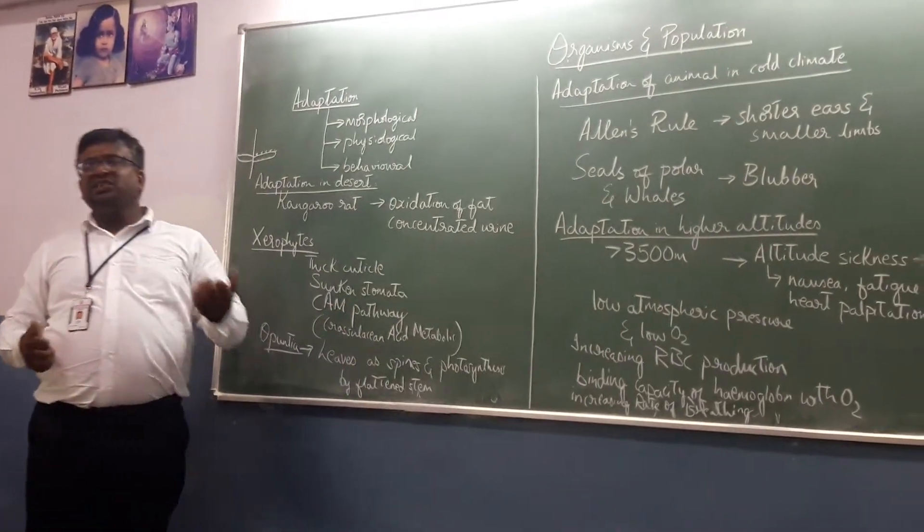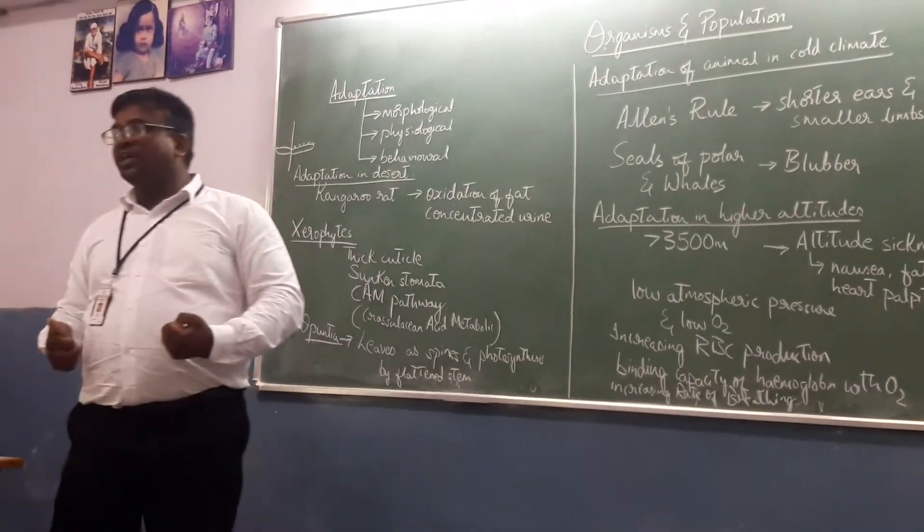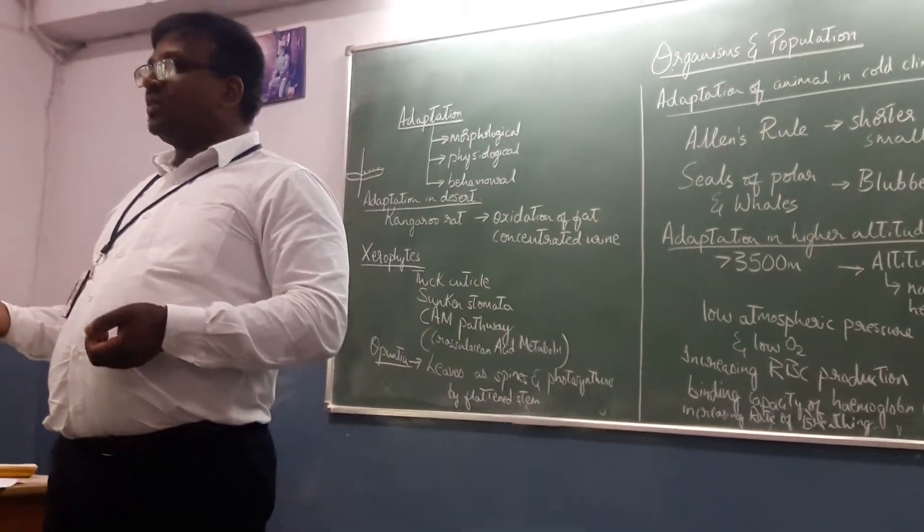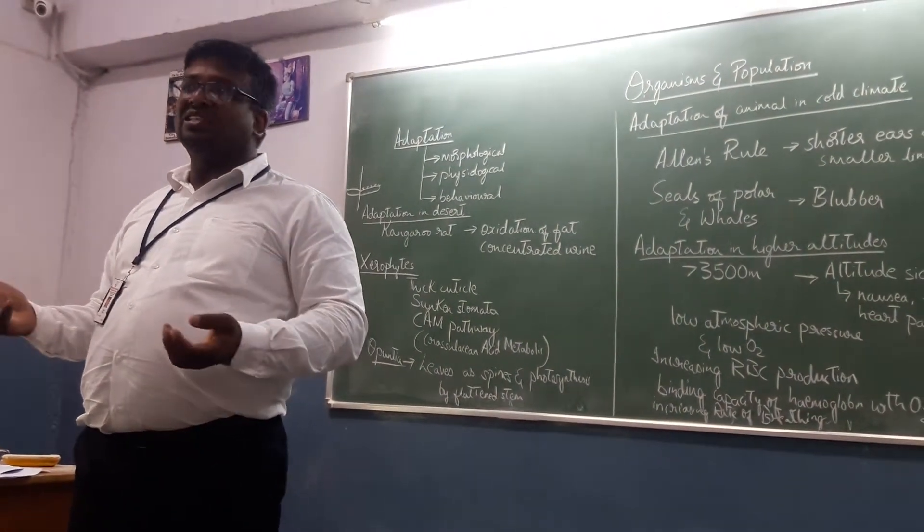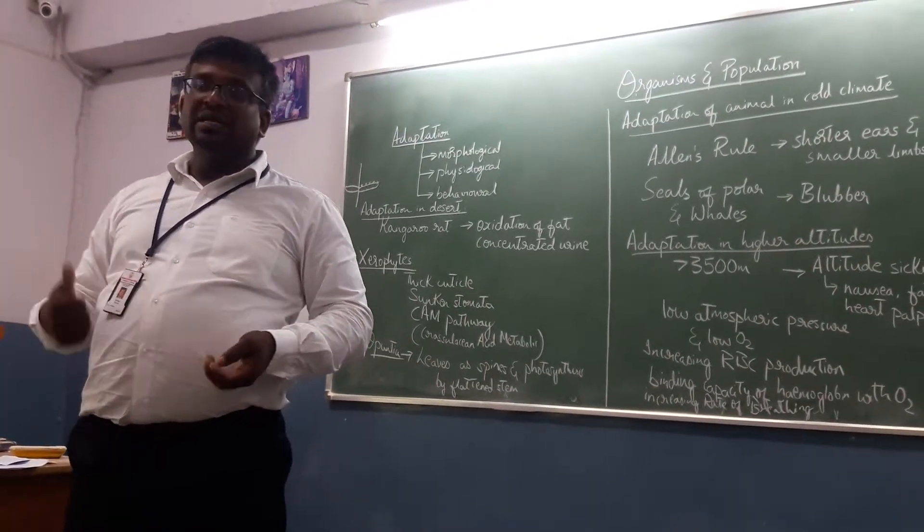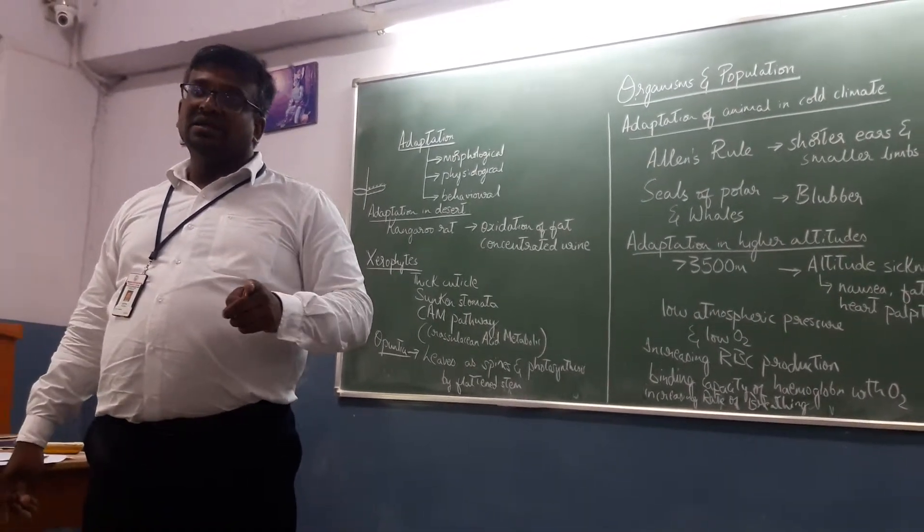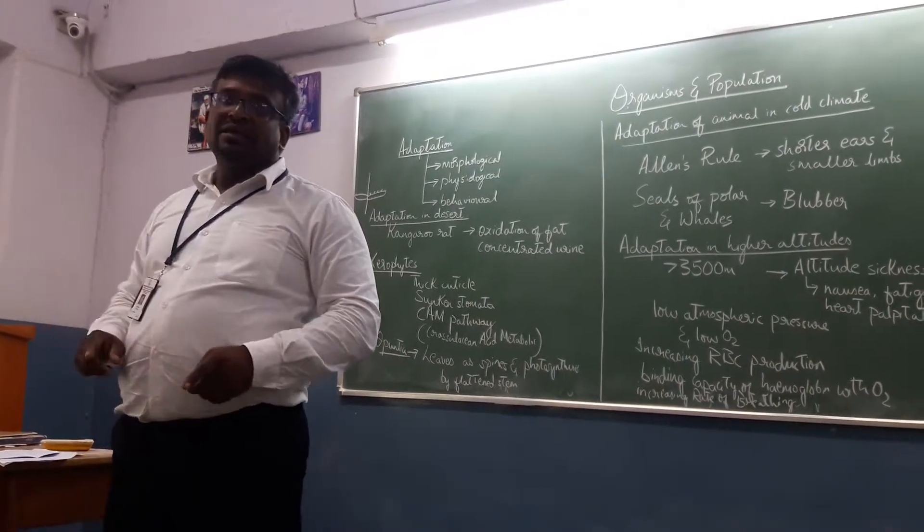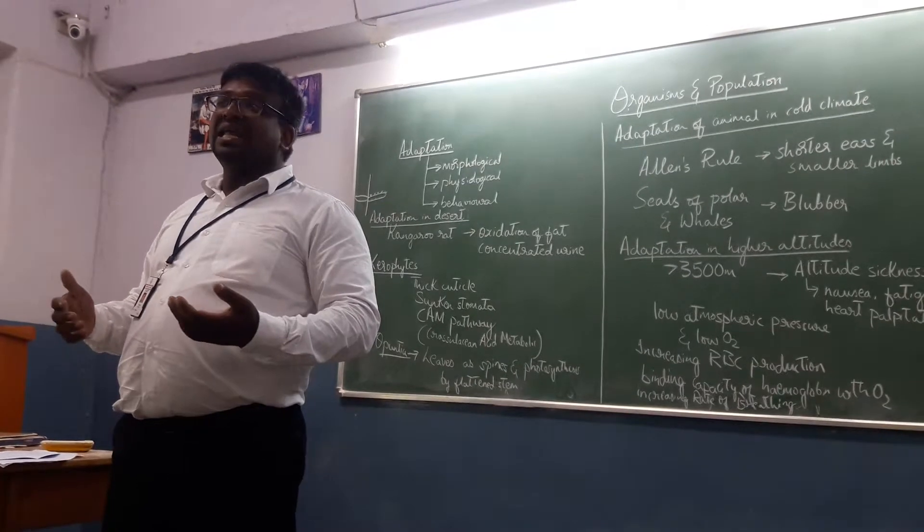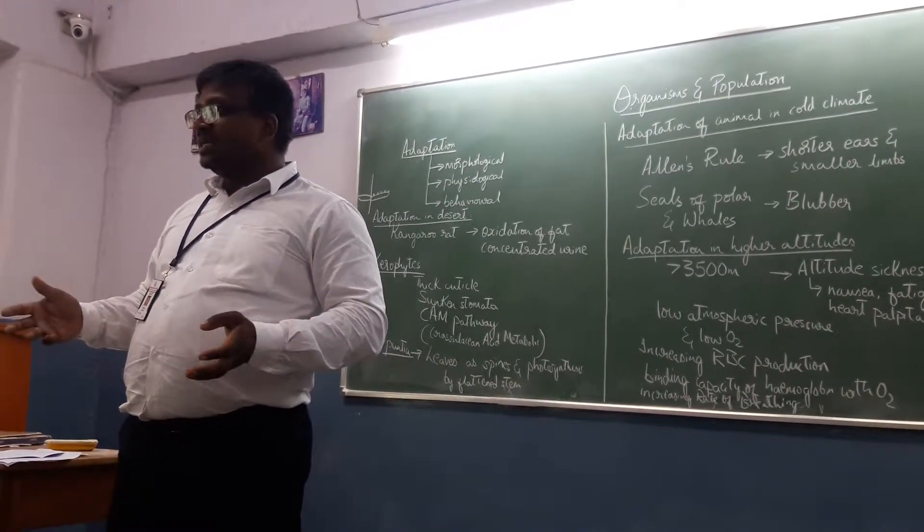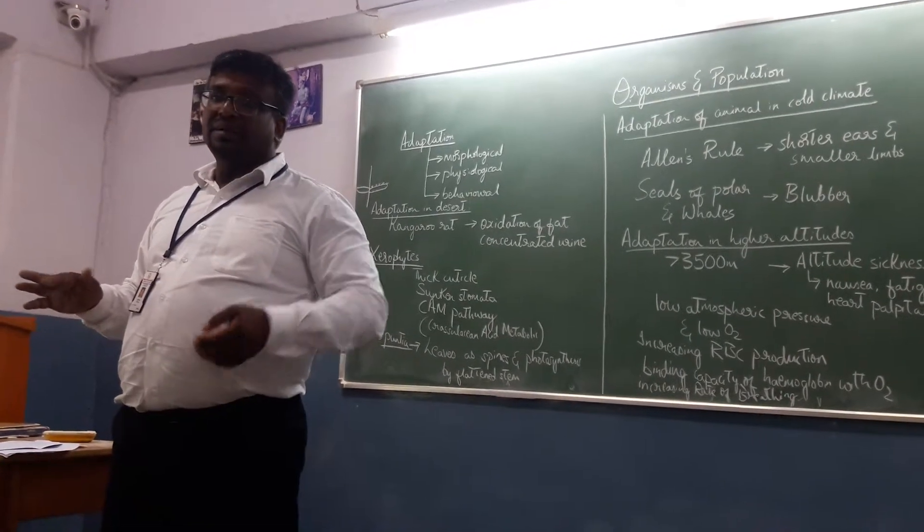The CAM pathway. The Crassulacean Acid Metabolic pathway is found in the members of Crassulaceae. I told you some examples like Kalanchoe and other plants. You find in this Crassulacean family, the stomata is closed during daytime and it is open during nighttime. During nighttime, because of evaporation or temperature factors, the transpiration would be lesser.